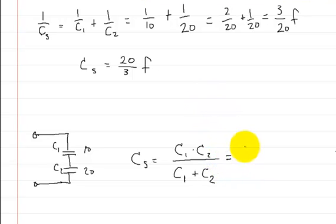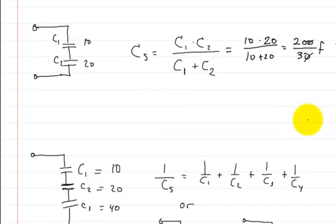So let's see. Here we have C1, which is equal to 10, C2, which is 20 farads, 10 plus 20. So we're going to get 200 over 30. One of these zeros cancels that. So again, we're left with 20 over 3 farads. Now let's continue on.